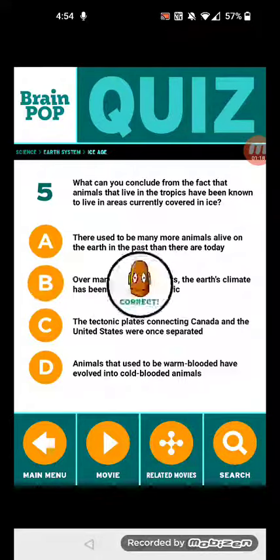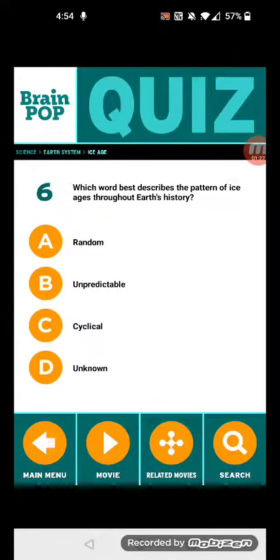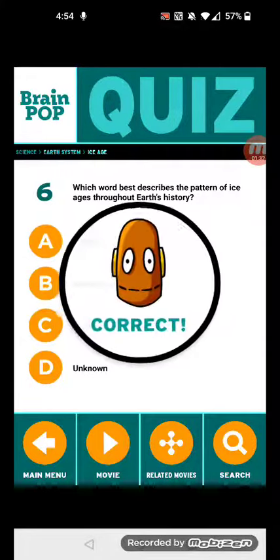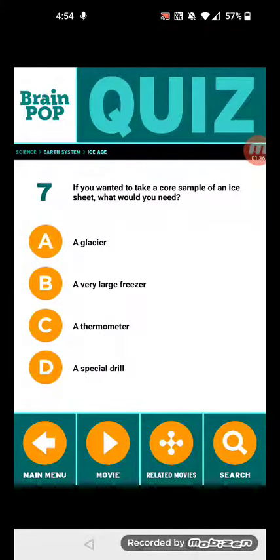Question 6: Which word best describes the pattern of ice ages throughout Earth's history? Let's see, cyclical. Question 7: If you wanted to take a core sample of an ice sheet, what would you need?